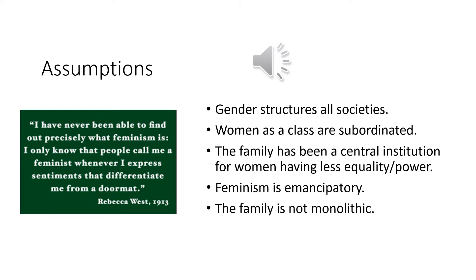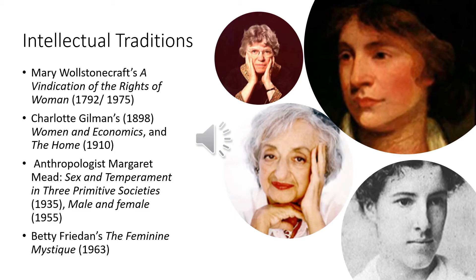Another assumption about feminism is that it's emancipatory, meaning feminism emphasizes social change. The other theories we have studied simply tried to describe families, and feminism is different in that it tries to say equality is the ideal — we should have social change. And then the last assumption is that the family is not monolithic, meaning there are varying forms of families and not all families are that standard North American family we've talked about.